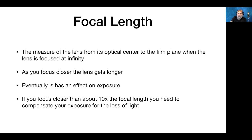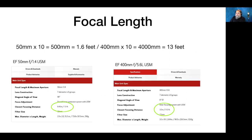Looking at a couple of lens specs: a 50mm times 10 is 500mm, which is about 1.6 feet, and the closest focusing distance for that lens is 1.5 feet. A 400mm Canon times 10 is 13 feet, and the closest focus is 11.5 feet — so it's relatively close in there.